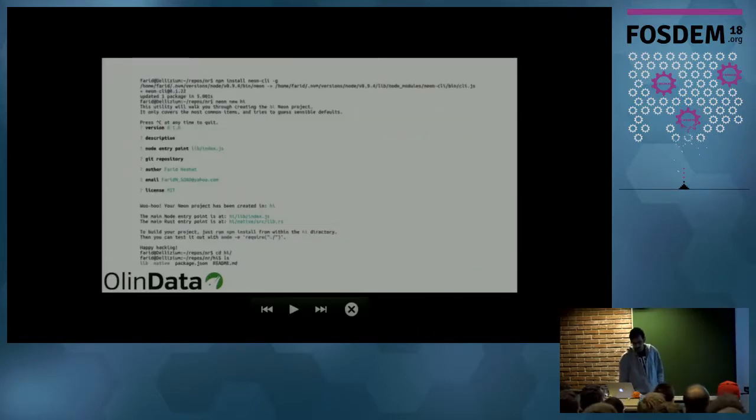So it's quite easy to get started with. You could install the CLI from NPM, and you can easily create a new project with Neon new. And then it will tell you that, hey, this is your JavaScript file, and this is your Rust file. Now they are connected.